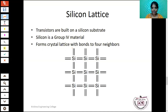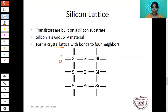Crystal lattice refers to the arrangement of atoms in a material. In a silicon semiconductor, each silicon atom shares electrons with neighboring atoms to form covalent bonds. At zero degrees Kelvin, the semiconductor material acts as an insulator. When temperature increases, the semiconductor acts as a conductor — electrons in the covalent bond gain enough energy to break the bond and move to the conduction band, enabling current flow through recombination of electrons and holes.